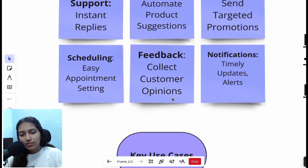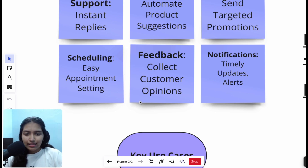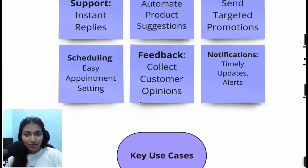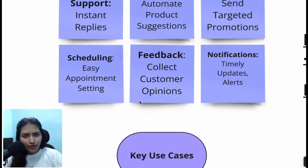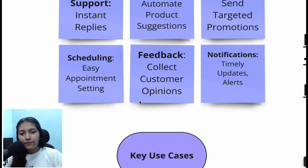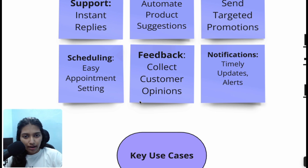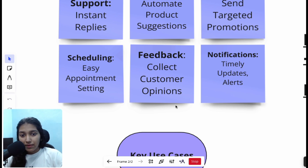The next use case is feedback, which is crucial. Instead of sending fixed messages with a form link, you'd have an AI chatbot do a conversation with the customer — it doesn't take more than two to five minutes. It might ask how they found the product they bought 10 days ago, collect feedback through a back-and-forth exchange, thank them with a coupon code, and then add all the information into the CRM.